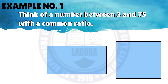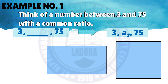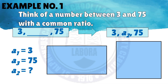Let us consider the first example: think of a number between 3 and 75 with a common ratio. We illustrate this as: 3, a sub 2, 75 — or rewritten as 3, a sub 2, and 75. So we identify: a sub 1 equals 3 (our first term), a sub 3 equals 75 (our third term). We need to find a sub 2, the second term of our sequence.